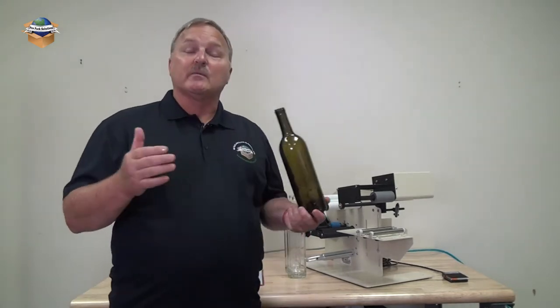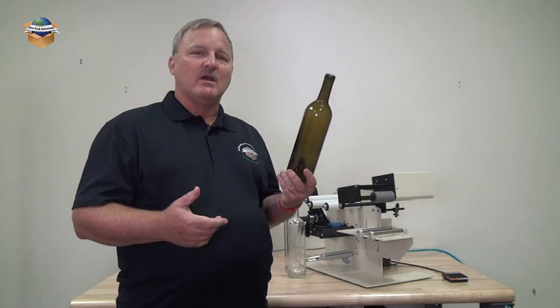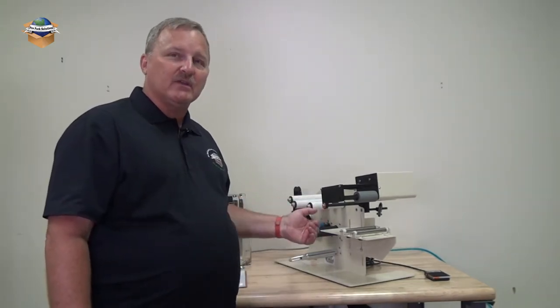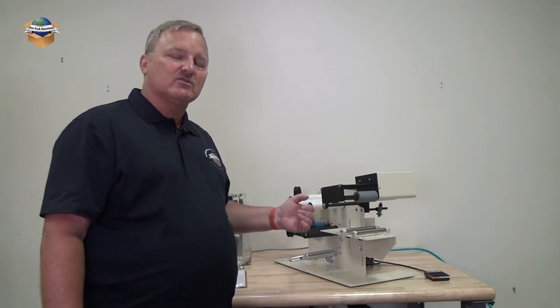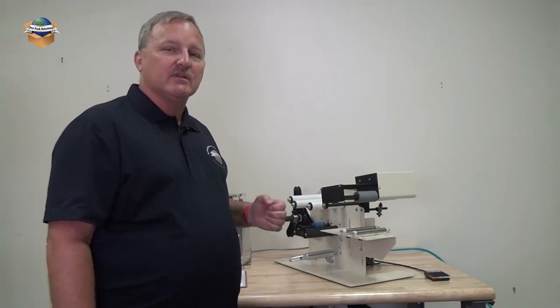This unit will label products from a quarter inch up to six and a half inches in diameter. Great for wine bottles. This machine dispenses labels one half inch by one half inch up to five inch by 18 inch long labels. Optionally we can set the applicator up to handle seven inch wide labels.